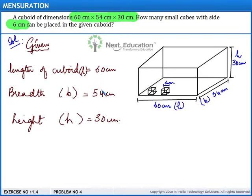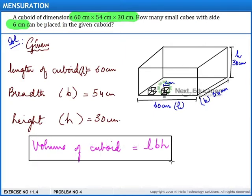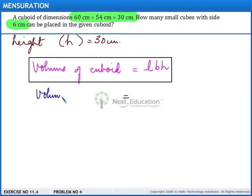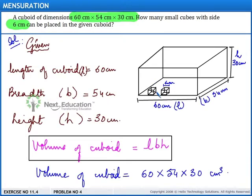The dimensions of the cuboid are: length = 60 centimeters, breadth = 54 centimeters, and height = 30 centimeters. Recalling the formula, the volume of a cuboid is L × B × H, that is length multiplied by breadth multiplied by height. Using this formula, the volume of the cuboid is equal to 60 multiplied by 54 multiplied by 30 cubic centimeters.